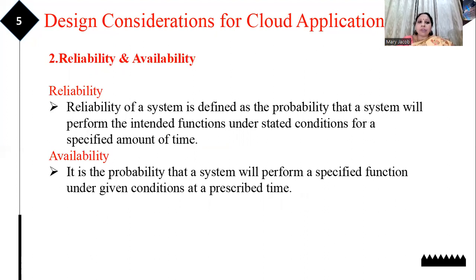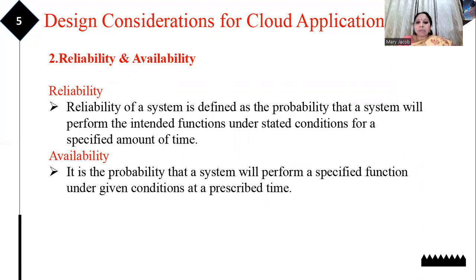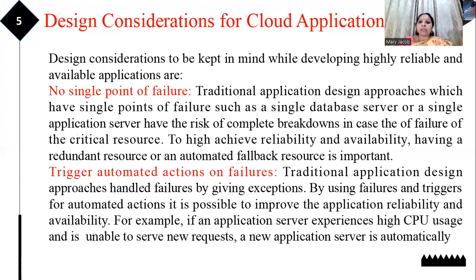Moving on to the next important property: reliability and availability. Reliability is the probability that your system can perform its intended functions under stated conditions for the prescribed period of time. Availability means the application is capable of performing the specified function under given conditions at a prescribed time — is it available as you have subscribed for it.